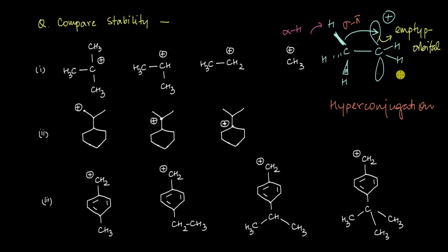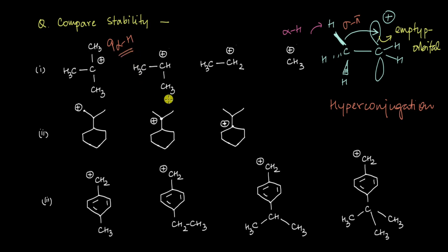A greater number of alpha hydrogens ultimately means a more stable cation. Looking at the first cation — a tertiary cation — there are three sp3 carbon atoms at the alpha position, each with three hydrogens attached, giving a grand total of nine alpha hydrogens that can undergo hyperconjugation. Comparing with the next cation, which has only two sp3 carbons directly attached, there are only six alpha hydrogens, while the next has only three, and the last has no sp3 carbon attached — so no alpha hydrogens at all.